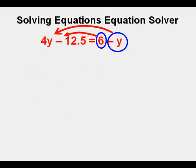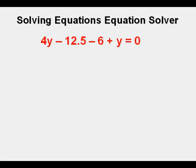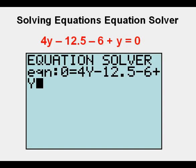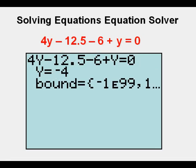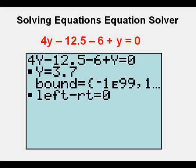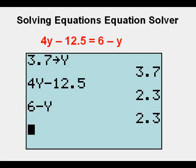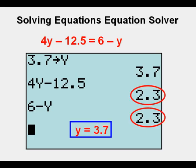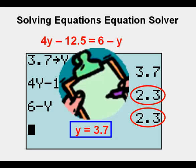We move the 6 and negative y to the left side and put 0 on the right side. The 6 on the left side becomes negative 6, and the negative y becomes positive y. We enter the left side into equation solver, then press alpha, then enter to solve. We press alpha and enter again to confirm. We see that 3.7 is the value of y. We check by re-entering the original equation, clearing the screen, storing 3.7 for y, then entering each side. Since both sides equal 2.3, we know that 3.7 is the correct value for y. Check.